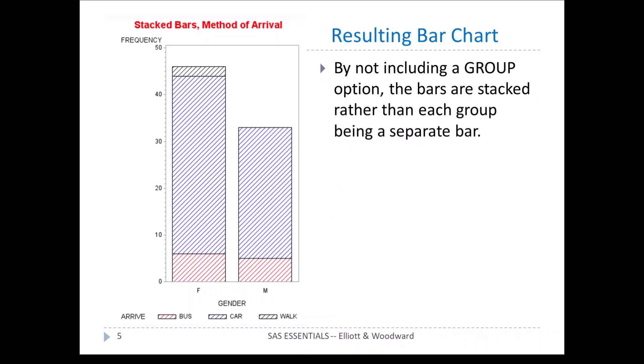There is no group option as we had in the previous examples. So what we get now is instead of the bars side by side, they're stacked one on top of the other. For instance, in female, we have three bars stacked on top of each other. By not including the group option, the bars are stacked rather than each group being a separate bar.